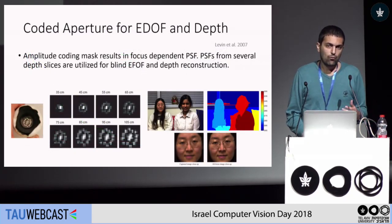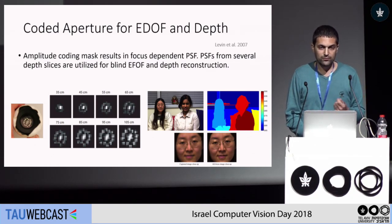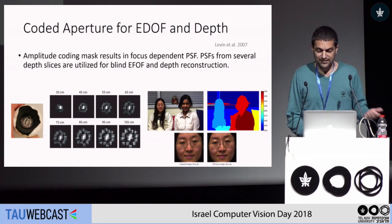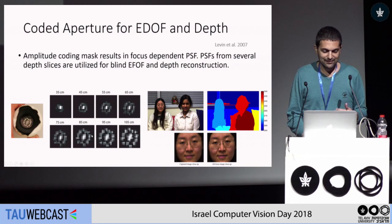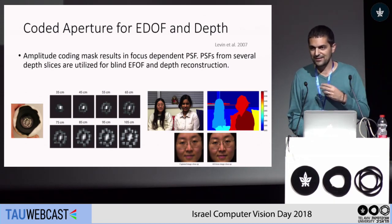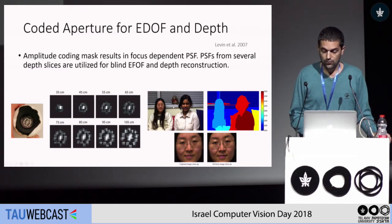One way to approach this is to try to make some coding in the aperture of the camera in order to get a depth map of an image or an image that is in non-focus. This was done by Matt Levine in 2007 and also in other previous works where coding of the mask was done — an amplitude coding, a binary mask that either passes light or blocks the light. In this way, some information is recorded in the captured image and it was possible to get a depth map or an all-in-focus image.